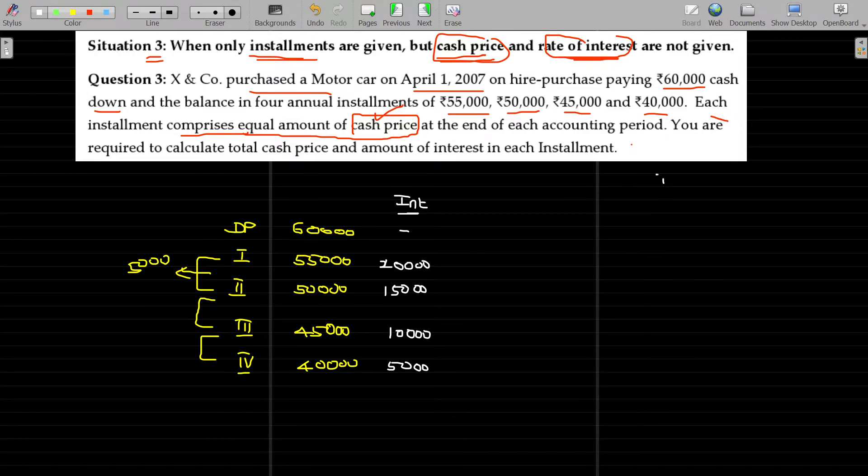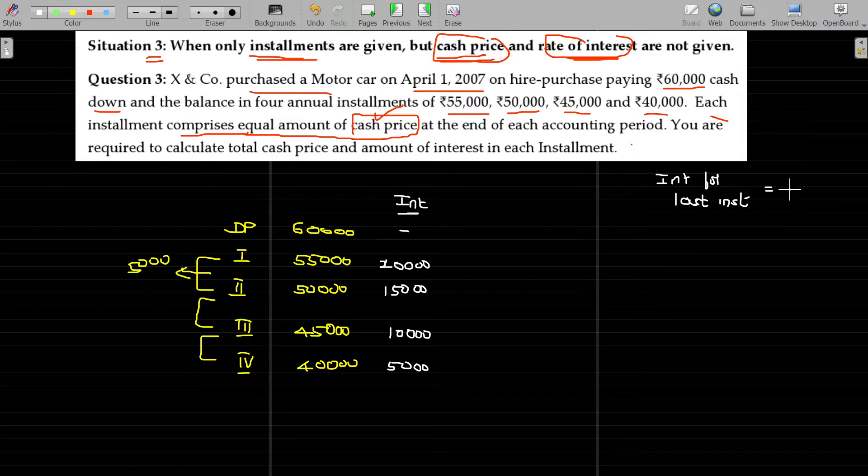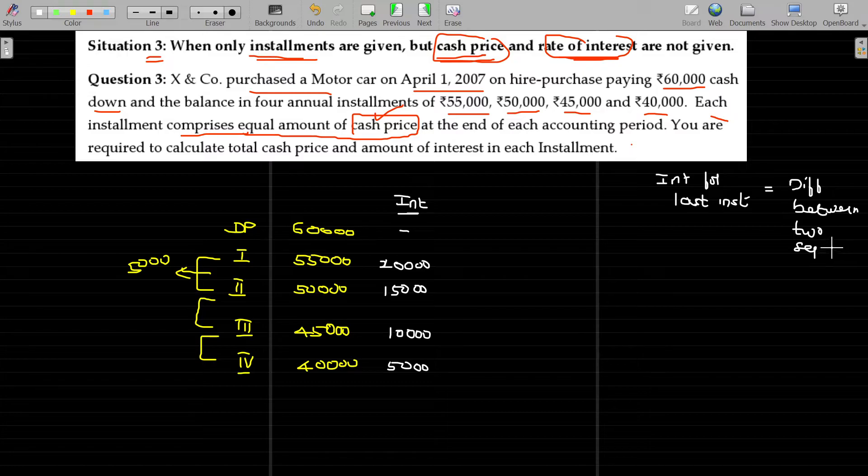So interest for last installment is equivalent to the difference between two subsequent installments.